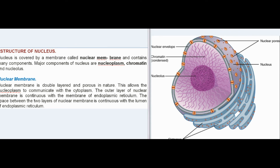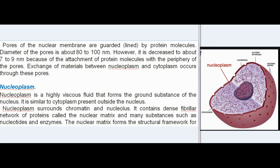The nucleus is covered by a nuclear membrane and contains nucleoplasm, chromatin, and nucleolus. The nuclear membrane is double-layered and porous, allowing nucleoplasm to communicate with the cytoplasm. The outer layer of nuclear membrane is continuous with the membrane of the endoplasmic reticulum, and the space between the two layers is continuous with the lumen of the endoplasmic reticulum. Pores of the nuclear membrane are guarded by protein molecules, with a diameter of about 80 to 100 nanometers, decreased to about 7 to 9 nanometers due to protein attachment.